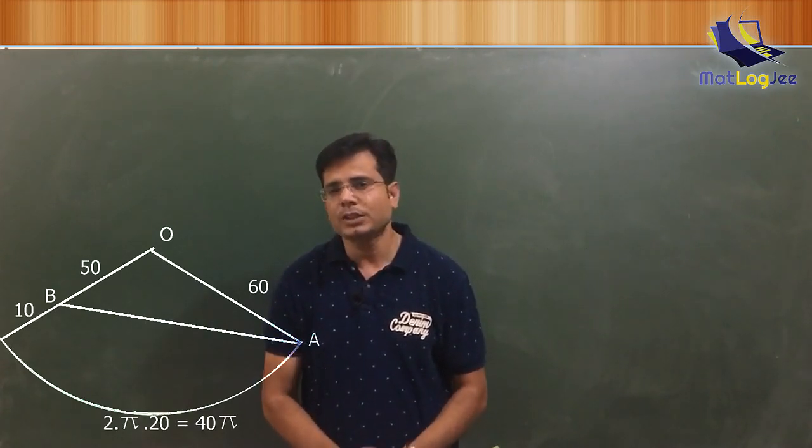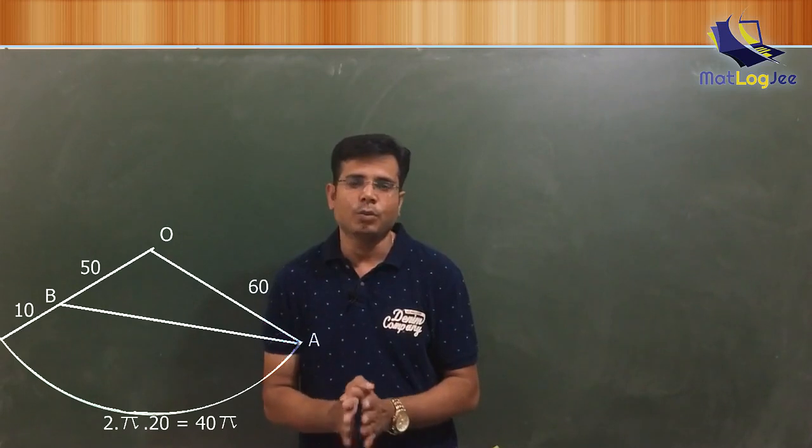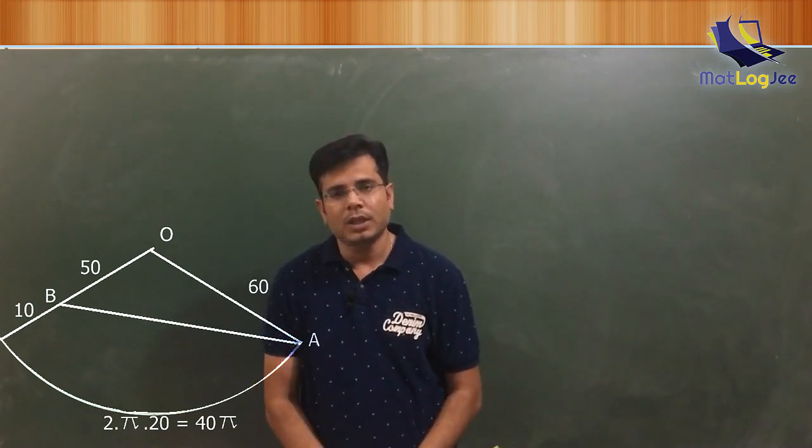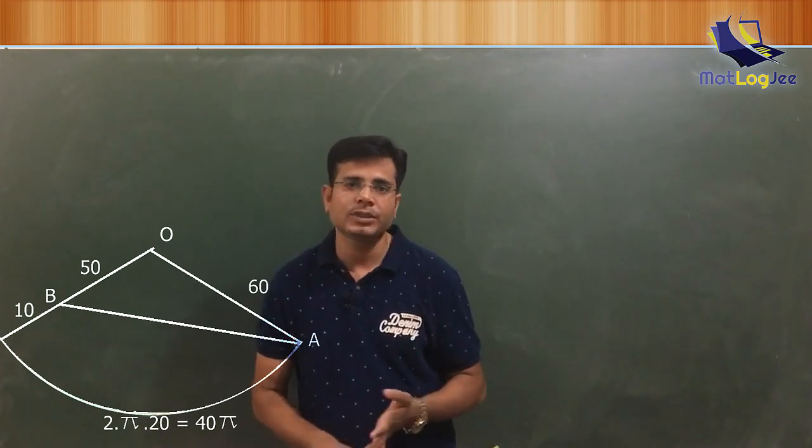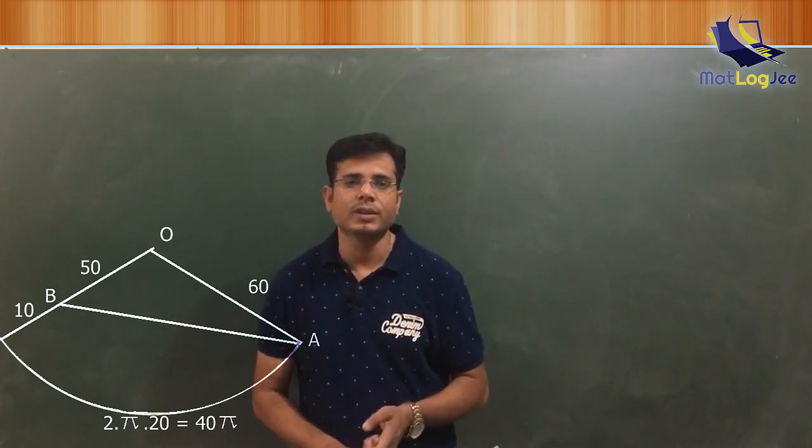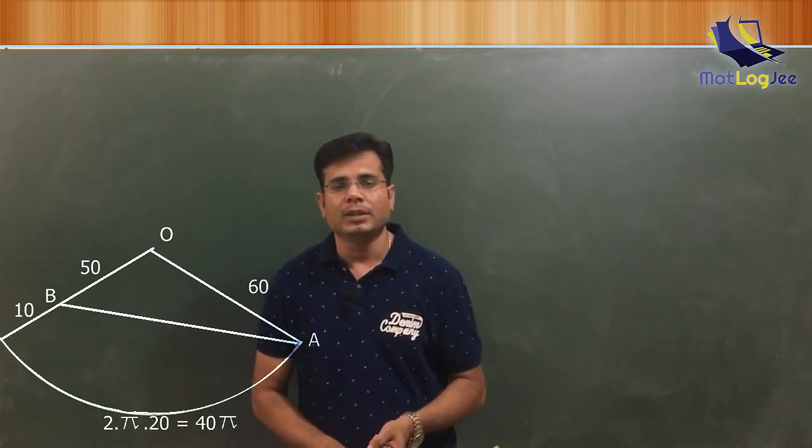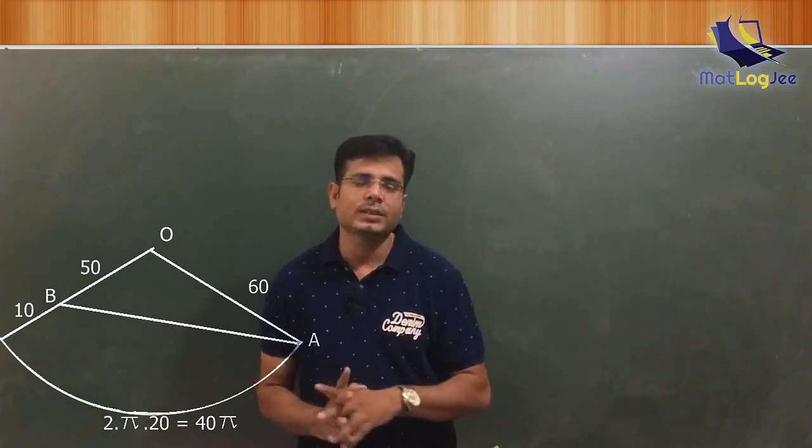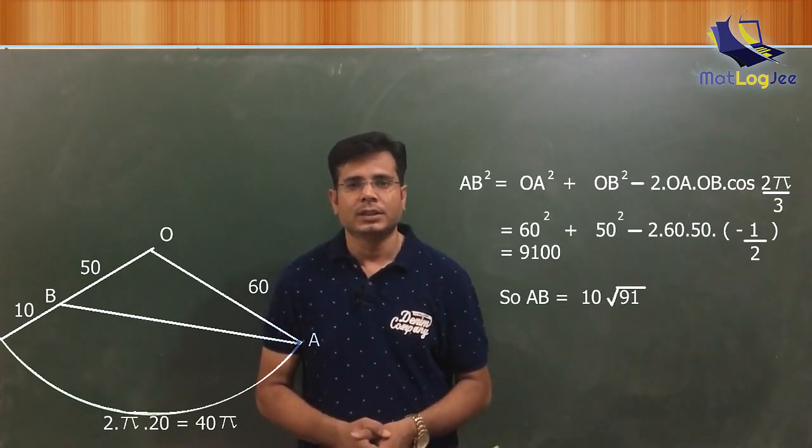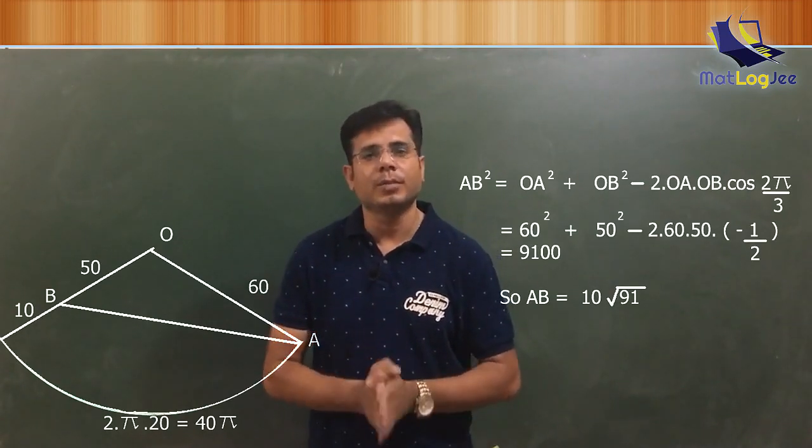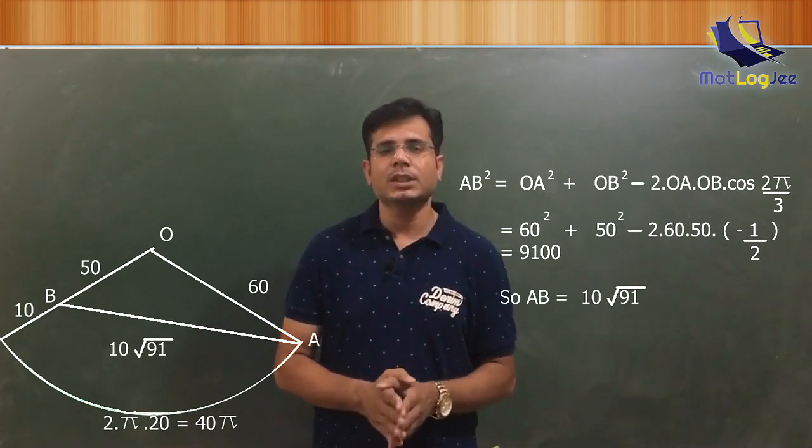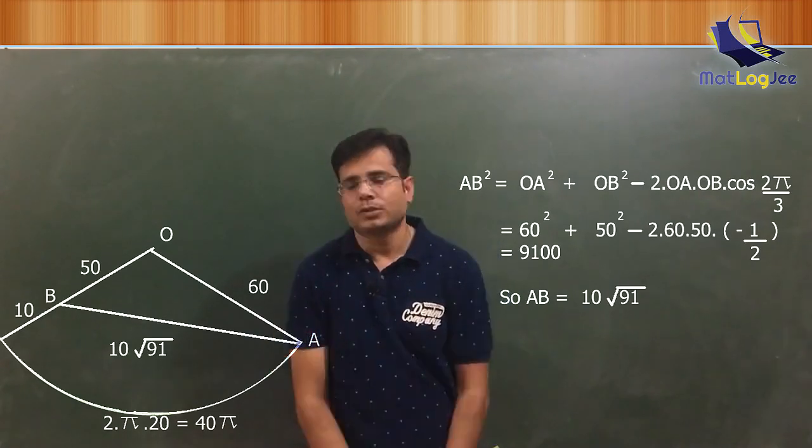Now by using the cosine rule, I hope you all remember the cosine rule. We have two sides 60 and 50 of a triangle and angle between them. So to find the third side, we will use cosine rule. And the calculation goes like this. And hence we get the value of path AB. So this is the length of path, but that's not all.